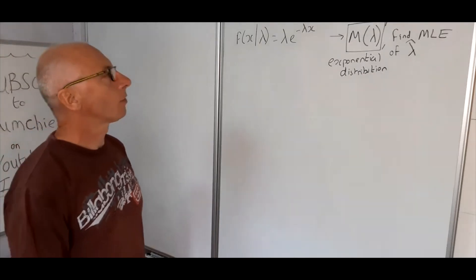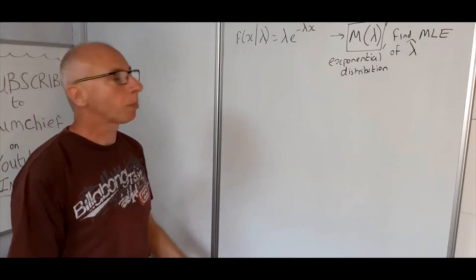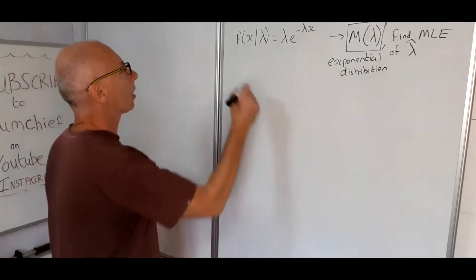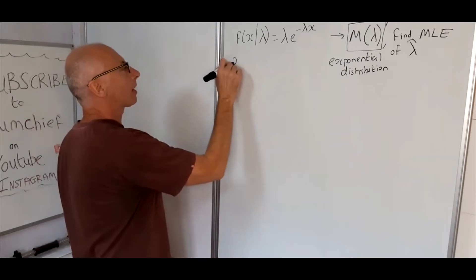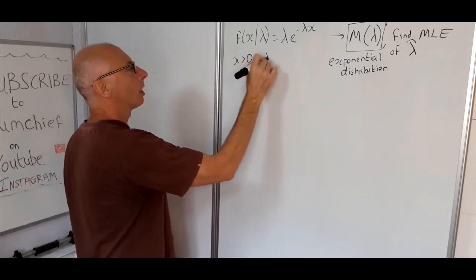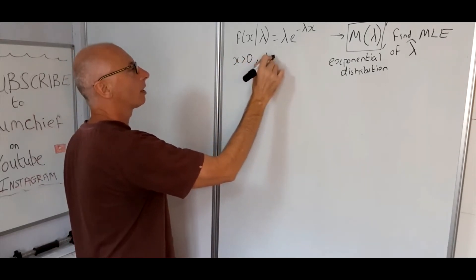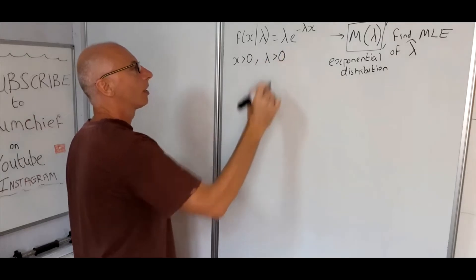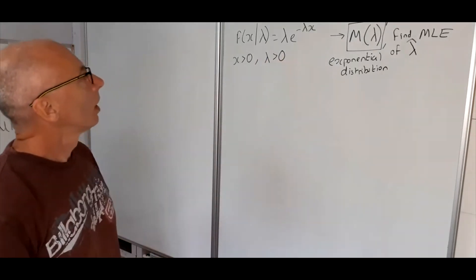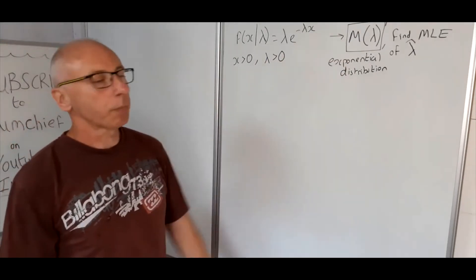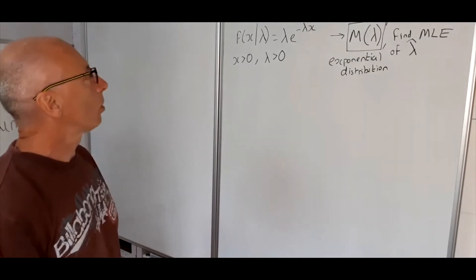First, the parameters: x is greater than zero, and lambda is also greater than zero. Those are the constraints for the exponential distribution.